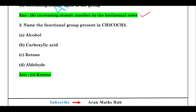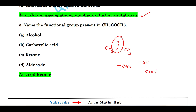Name the functional group present in CH3–C(=O)–CH3. The functional group is ketone. CH3CHO is the aldehyde, –OH is the alcohol, and –COOH is the carboxylic acid. So the answer is ketone.